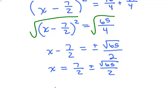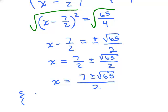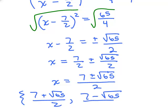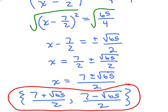This gives us two solutions. First, I'm going to write it as one fraction: 7 plus or minus square root of 65 over 2. Remember, you just write the denominator once. So this gives us two solutions: 7 plus square root of 65 over 2, and 7 minus square root of 65 over 2. Those are the two answers to this problem.